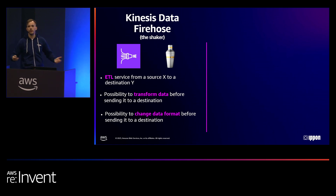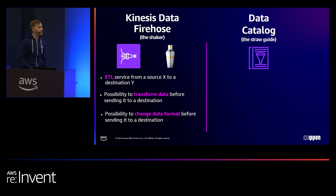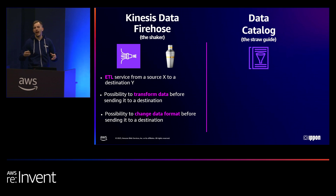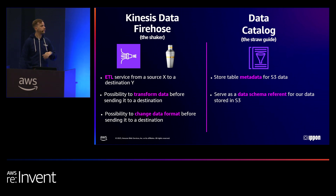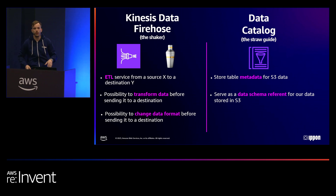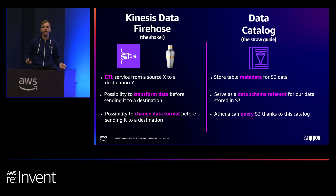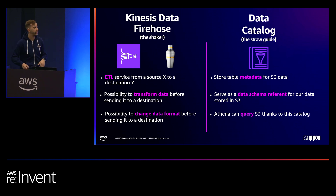The name on my slide is Data Catalog, but this comes from AWS Glue. This is what I like to call the straw guide — you'll see why shortly. Glue Data Catalog is a service that stores table metadata, specifically metadata for the S3 data in our case. It really serves here as a data schema reference for the data that are going to be stored in S3. Every time we query things in this S3 bucket using AWS Athena, it will be thanks to this data catalog table that Athena knows which type of query is possible.